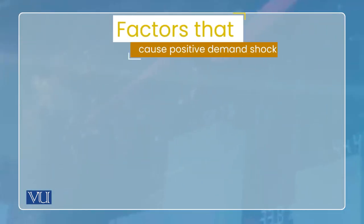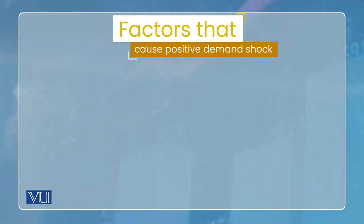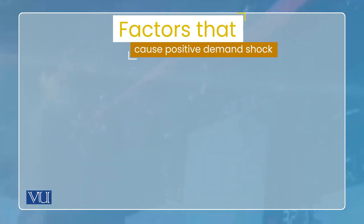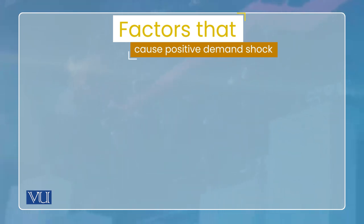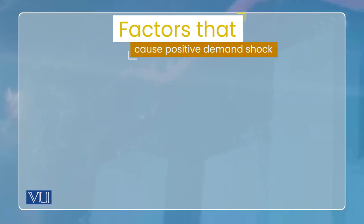So in this lecture we will consider only shocks related to aggregate demand, which are known as aggregate demand shocks. Ab question ye aayega ki wo koon se factors hain jo aggregate demand ka shock cause karte hain - koon sa variable change ho ya economy mein kya ho to hum kahenge ke aggregate demand shock aaya hai. Aggregate demand shock ke liye jo factors hain, wo woh hain jo aap ne goods market ke andar ya monetary policy curve se related padhe hain. Un saroon ko combine karein to aggregate demand ke shift factors ban jaate hain.